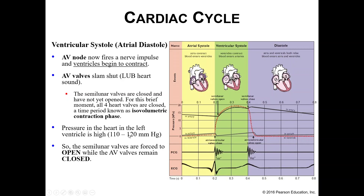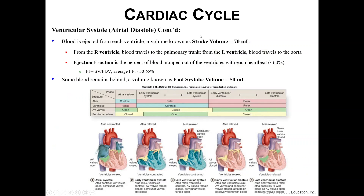Once we hit the pressure we need, the semilunar valves open up. The AV valves stay closed, but the semilunar valves open and blood gets pumped through both your pulmonary trunk and your aorta. Blood is ejected from the ventricles, but the amount of blood that leaves is not the full 120 milliliters — it's only about 70 milliliters. We call this your stroke volume. This is another number you'll want to remember, because it will come up again and again.